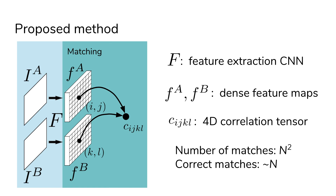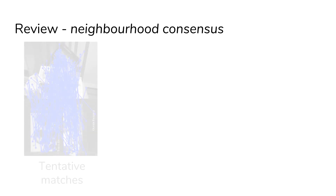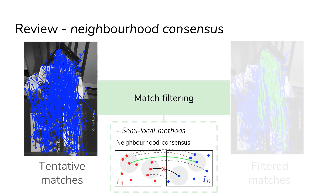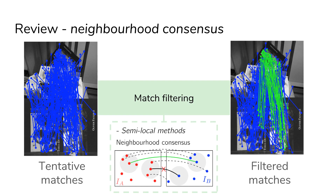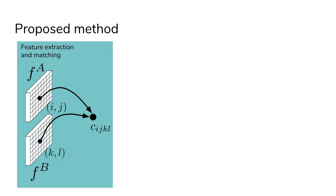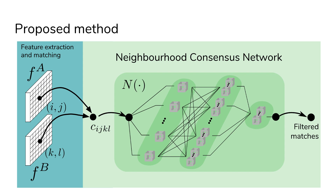Note that most matches contained in this tensor are incorrect. Classically, semi-local methods such as neighborhood consensus have been used to remove incorrect tentative correspondences by analyzing the coherence of neighboring matches. In this work, we propose a trainable version of the classical neighborhood consensus approach, implemented using a 4D convolutional network with several layers. The filters from the first layer span a local neighborhood in each of the images and capture matching patterns between these two regions, which are then processed by the subsequent layers.